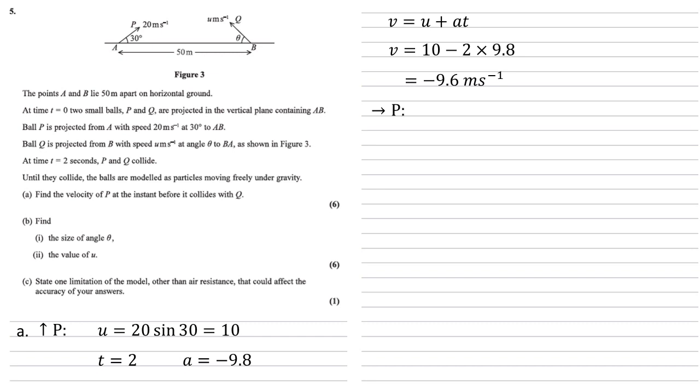We're now going to resolve horizontally. Horizontally, we've got the 20 metres per second. This time we're going through the 30 degrees, so it's 20 cos 30, which equals 10 root 3 metres per second. The particle's moving freely under gravity, so there's no acceleration here. It's going to stay at 10 root 3.